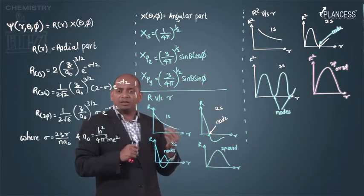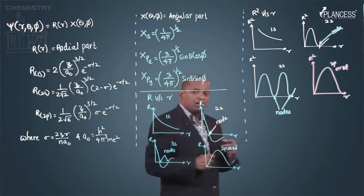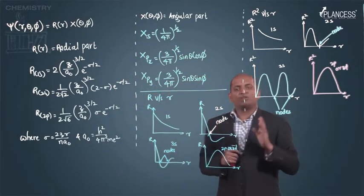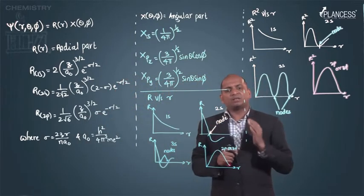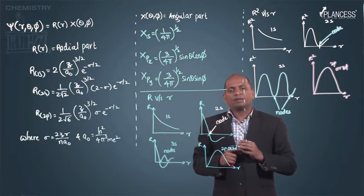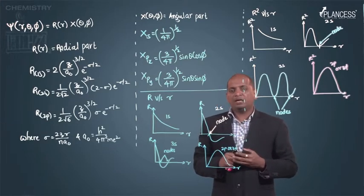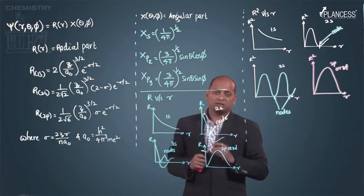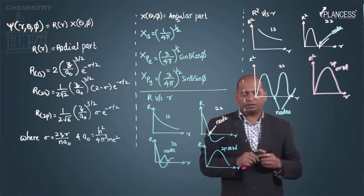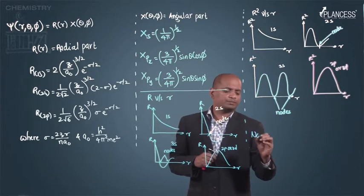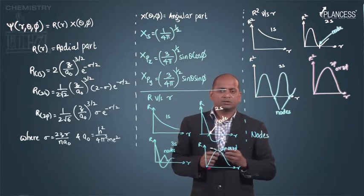We can predict the shape of graph for 3d as well as 3p, or 4s orbital also, by knowing the formulas. What are the formulas? I just want to revise those formulas - nodes.